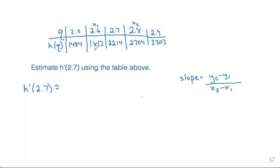So that would make the y1 would be the 1813 and the y2 would be the 2704. So plugging in this data into our slope equation gives 2704 minus 1813 over x2 is 2.8 minus x1 is 2.6.